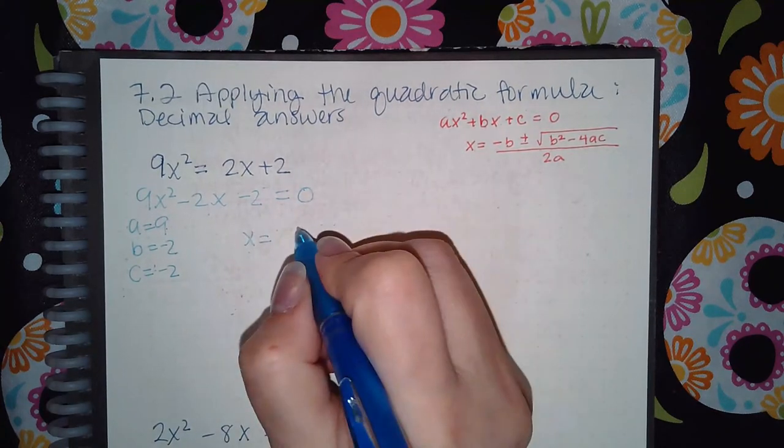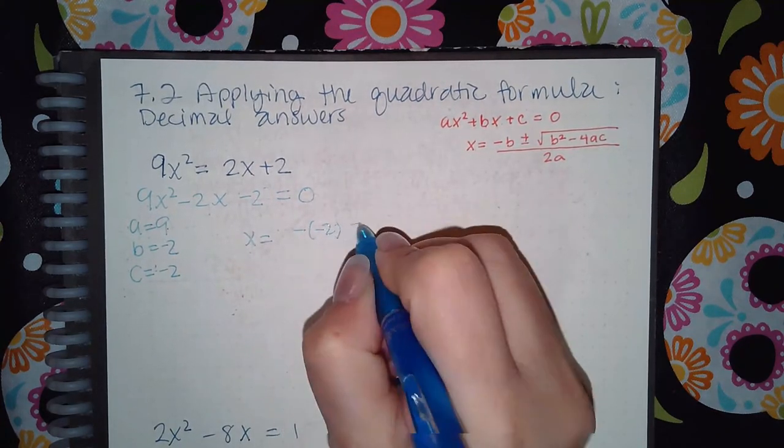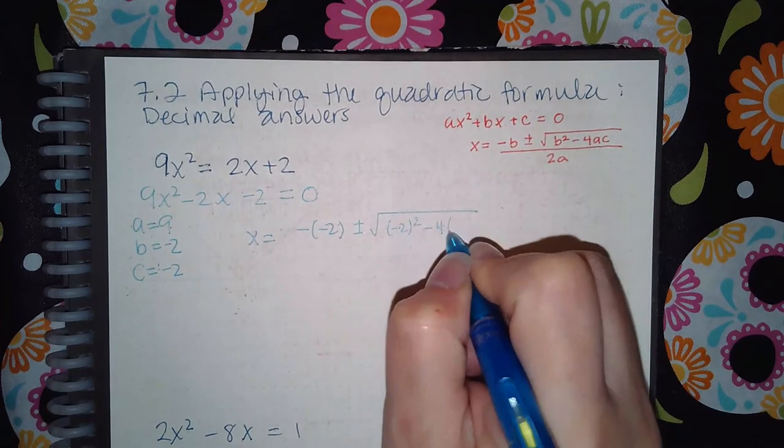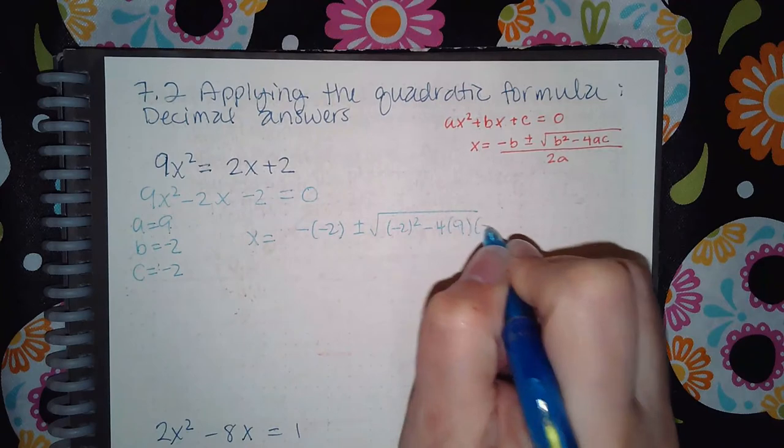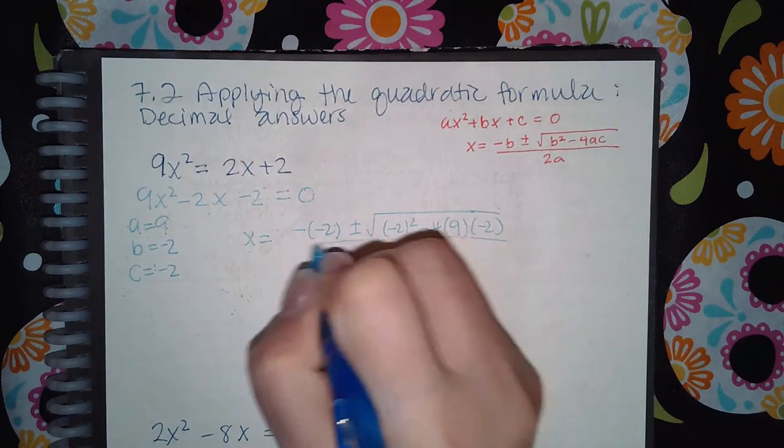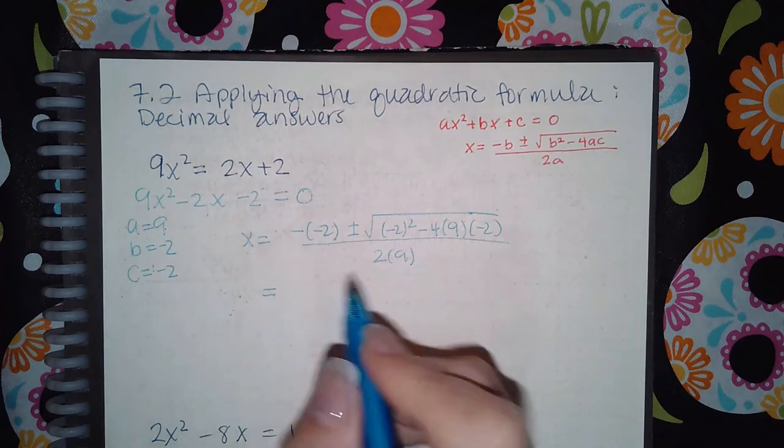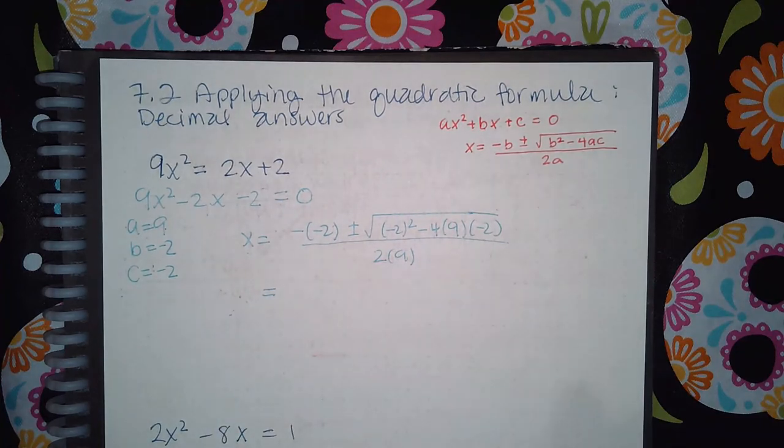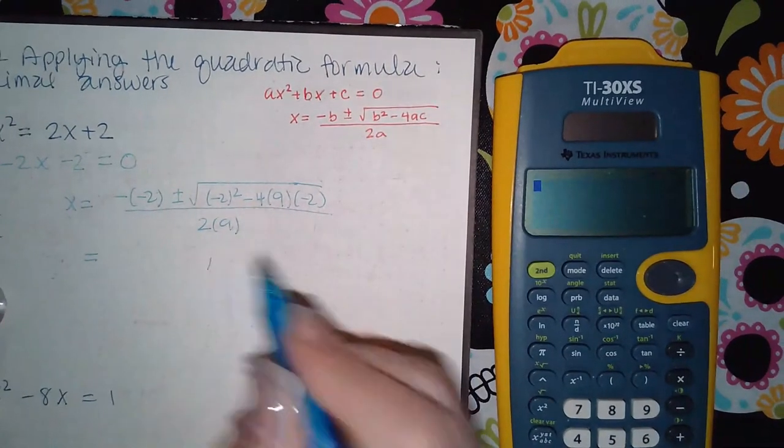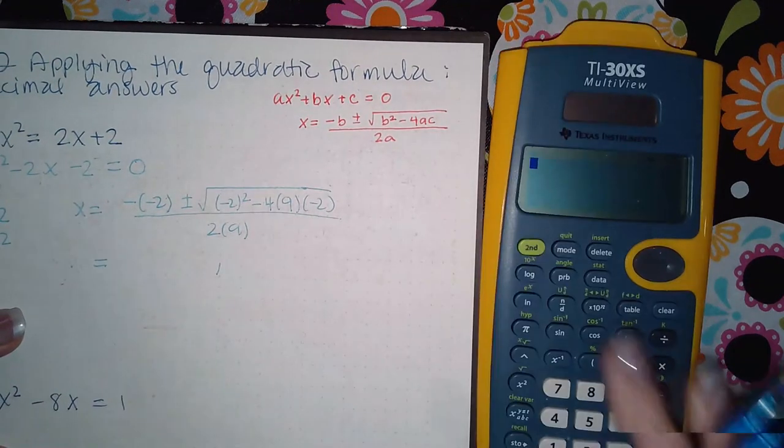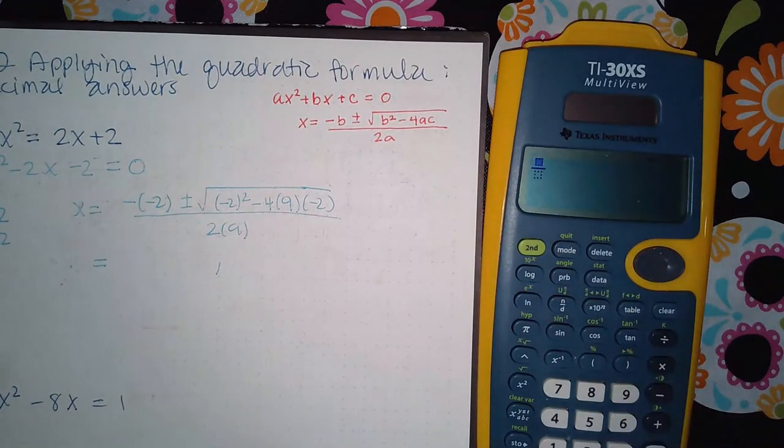Let's plug it into the formula: negative b plus or minus square root of b squared minus 4ac all over 2a. Now in this case they do want decimal answers, so I can and will type the entire thing in my calculator. But I have to type them individually. I cannot type this symbol in the calculator, so I'm going to do the plus first and then I'll go in and do the minus.